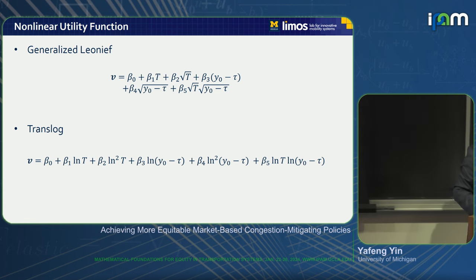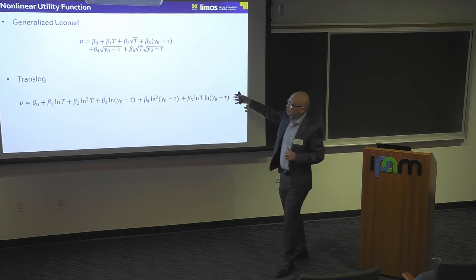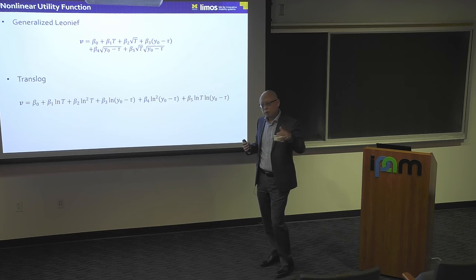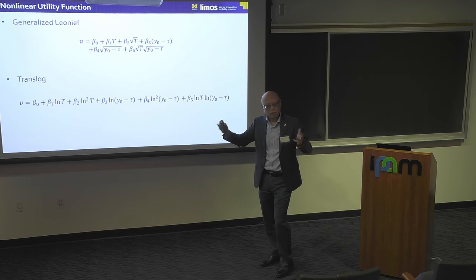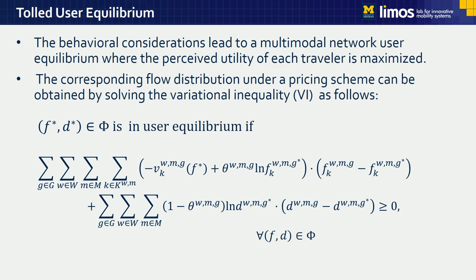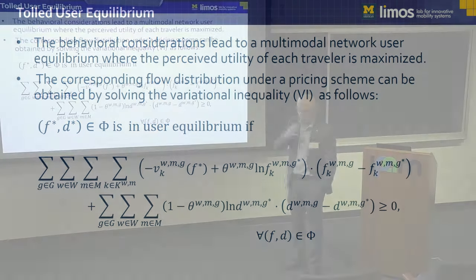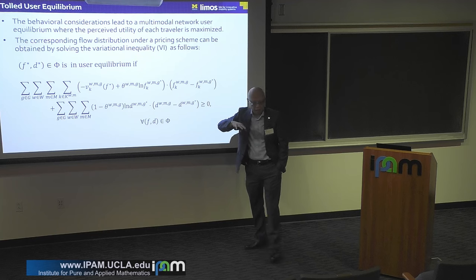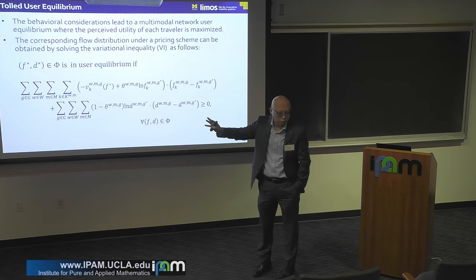Once you specify the nonlinear utility function, you assume everyone uses the nested logit model to make choices of mode and route. Because travel times are flow-dependent, we look at the steady state of the network — the multimodal network user equilibrium — where the perceived utility of each traveler is maximized. You can formulate that steady state as an equivalent variational inequality. By solving this variational inequality, you can estimate the flow distribution and realized demand — that's how you characterize the equilibrium conditions, equilibrium flows, travel times, and demand.